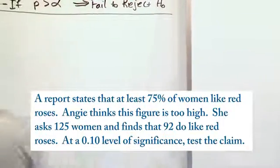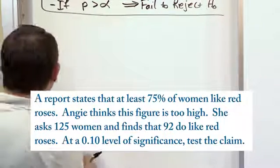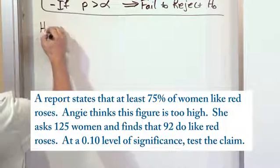So the first thing we need to do is write the null and the alternate hypothesis. Now it says right here, a report states that at least 75% of women like red roses. That is the null hypothesis.